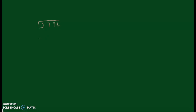For today's practice we've got some division: 2,796 divided by 23. We follow these steps: divide, multiply, subtract, compare, bring down, then either get a remainder or repeat.